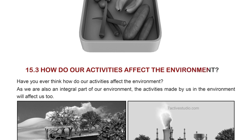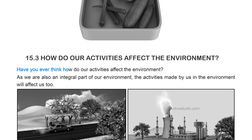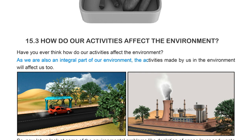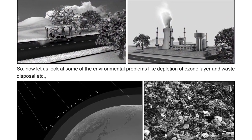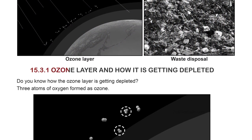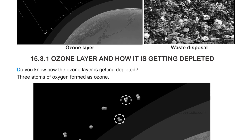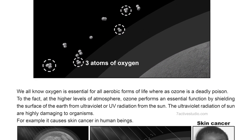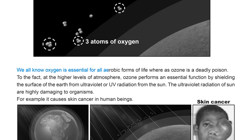How do our activities affect the environment? Since we are an integral part of the environment, activities we make in the environment will affect us too. Let us look at some environmental problems, such as depletion of the ozone layer and waste disposal. The ozone layer is getting depleted — three atoms of oxygen form ozone. While oxygen is essential for aerobic life, ozone is a deadly poison at ground level.